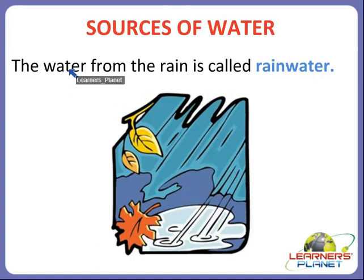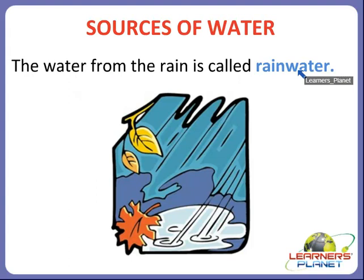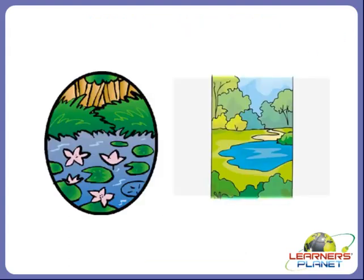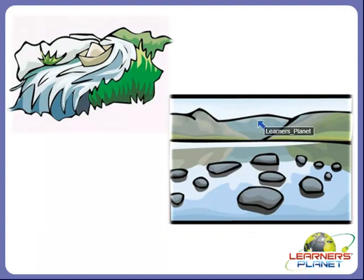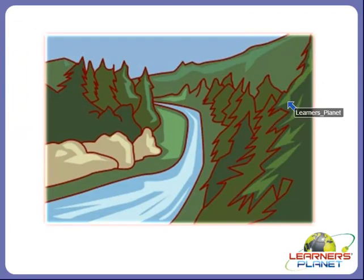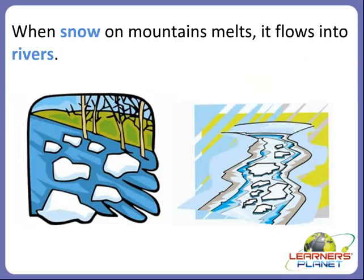This water which we get from the rain is called rain water. The rain water fills the puddles, the ponds, the lakes, rivers and streams. This is a stream. We saw that the rain water fills many places.